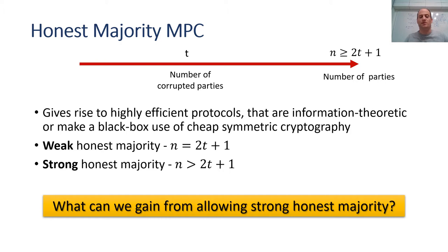This question may seem odd at first because we are used to thinking that in cryptographic protocols there is a trade-off between security and efficiency — if we reduce the security threshold we can improve efficiency. However, this is not true for the honest majority setting.